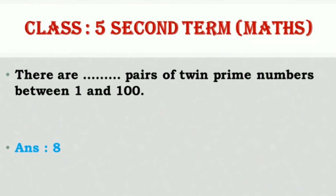There are 8 pairs of twin prime numbers between 1 and 100.